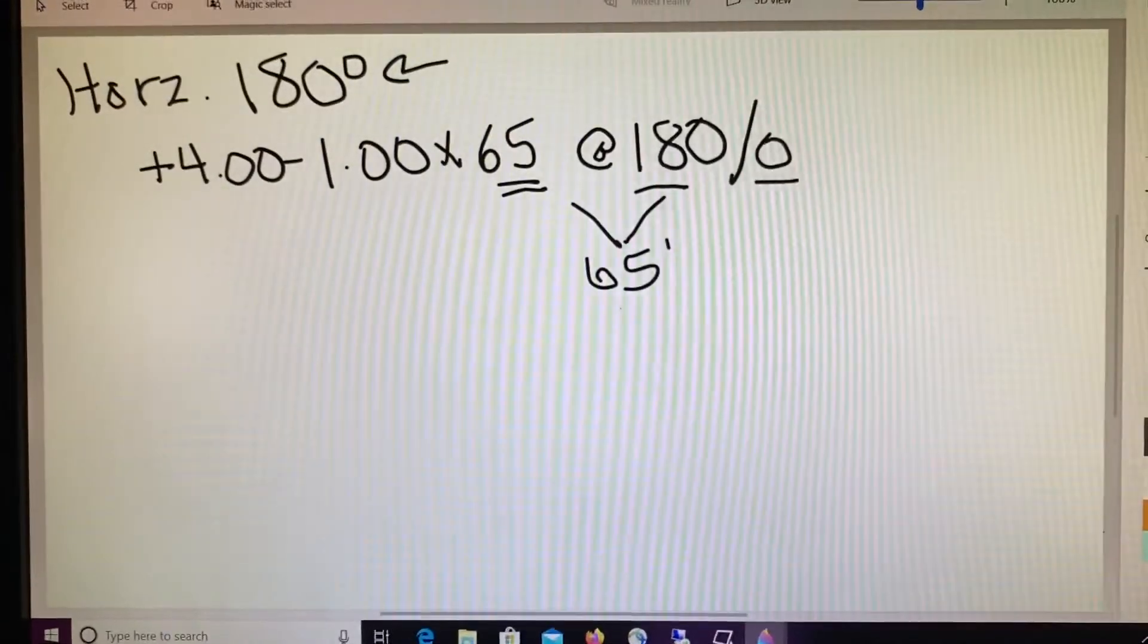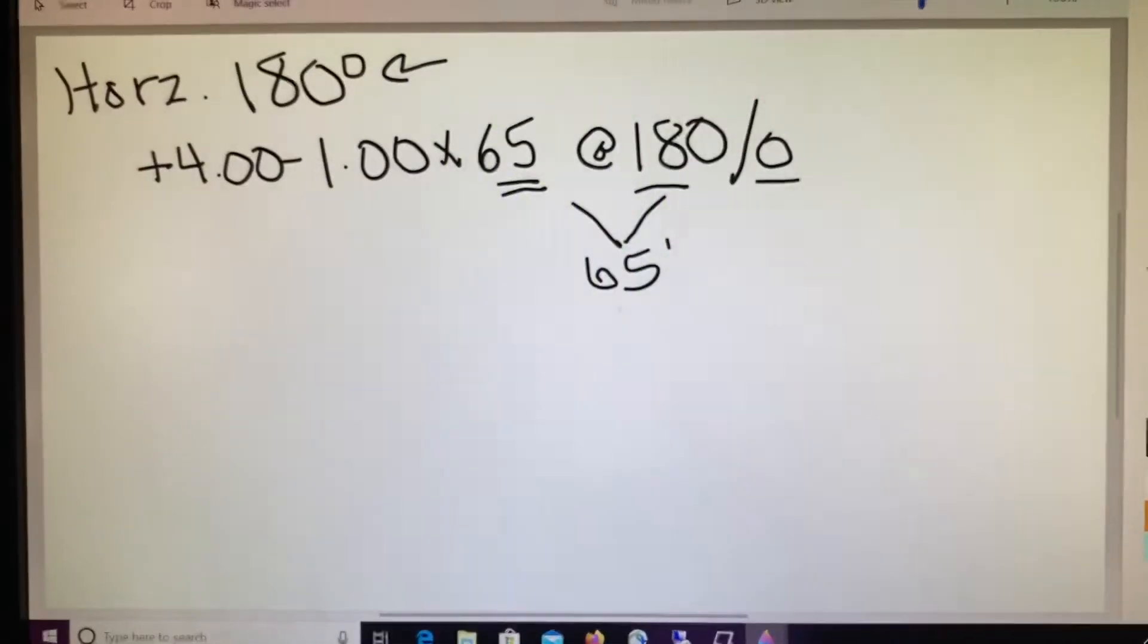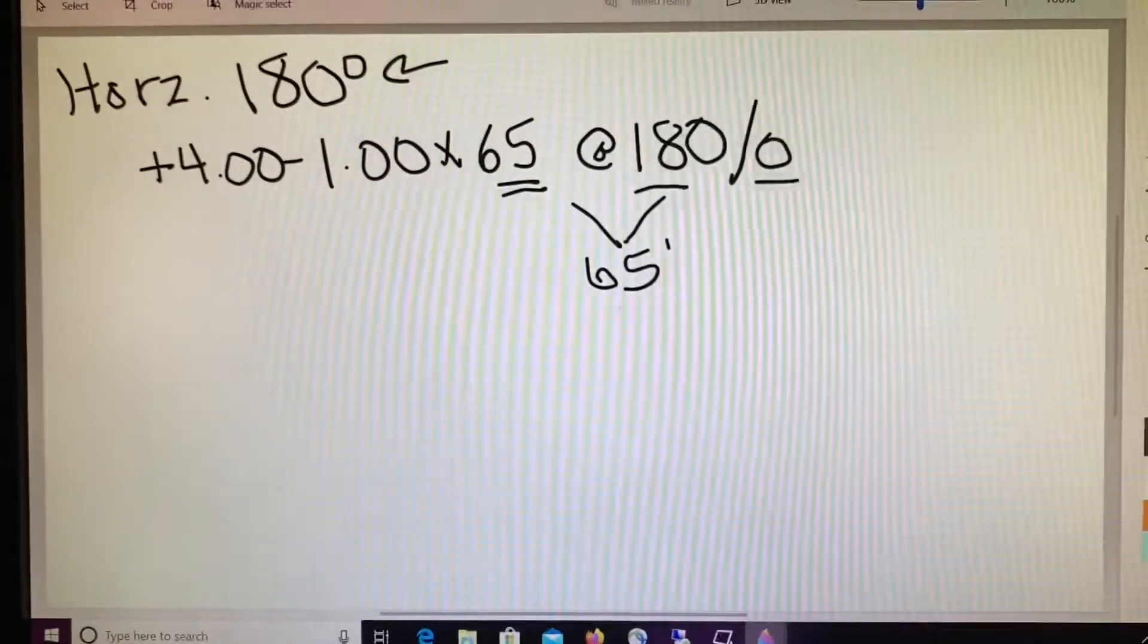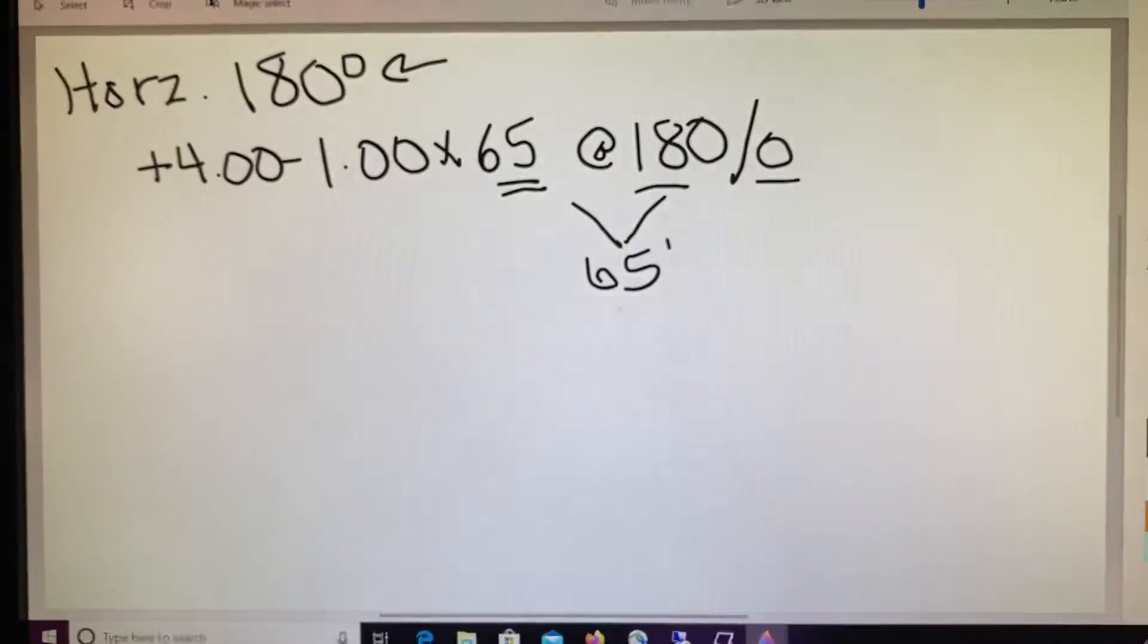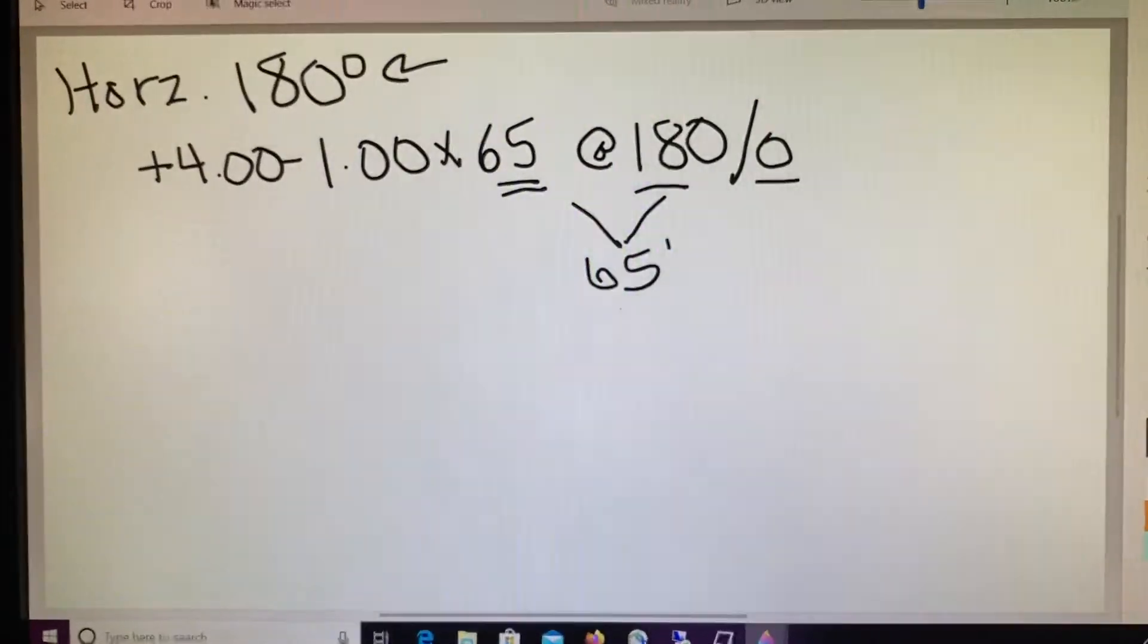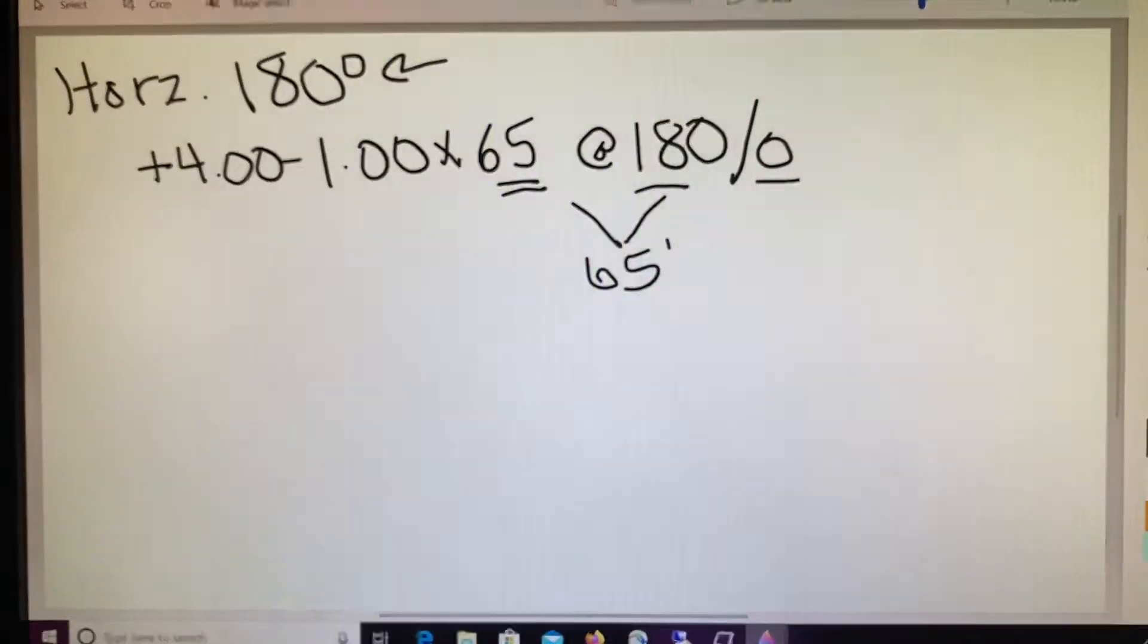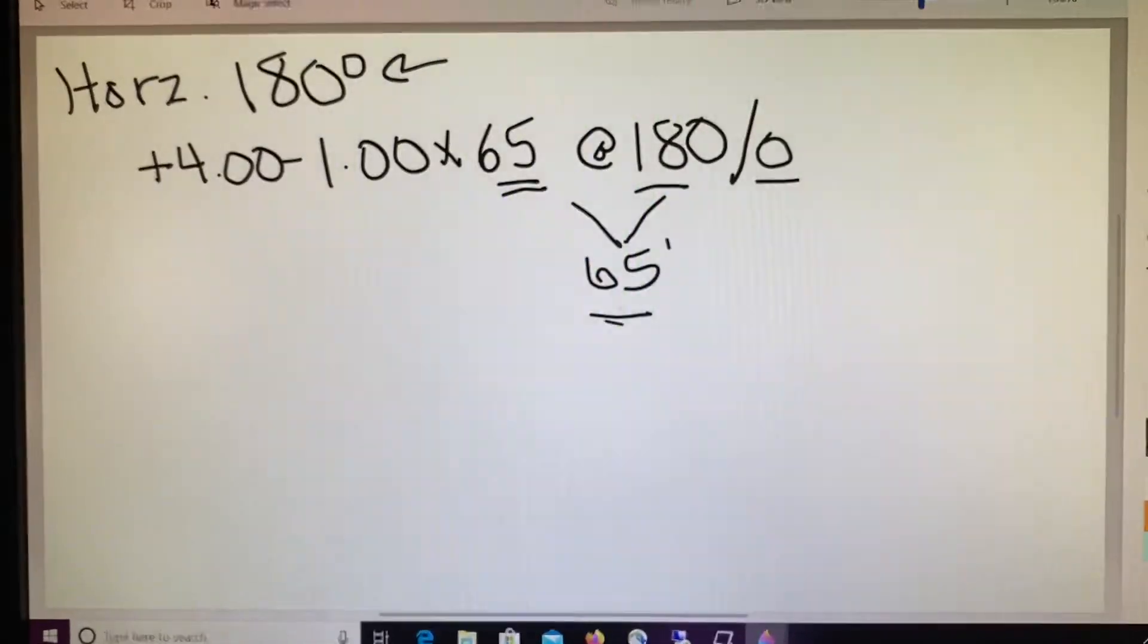Now if we remember our different percentages and the degrees away, we're going to pick the closest one. We had 0% equaling 0 degrees away. If we were 30 degrees away, we were going to be using 25%. If we were 45 degrees away, we were using 50%. 60 degrees away, we were using 75%, and then 90 degrees away, we were going to use 100%. 60 degrees is the closest to our finding of 65, so we will be using 75% of the cylinder power.